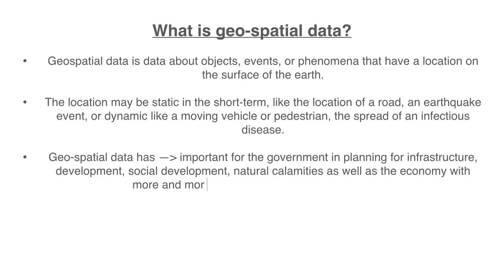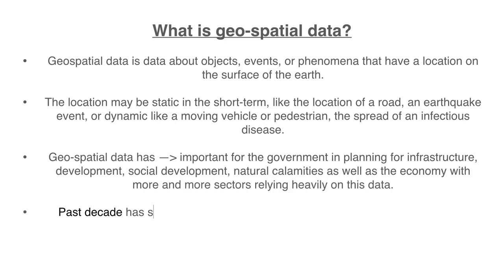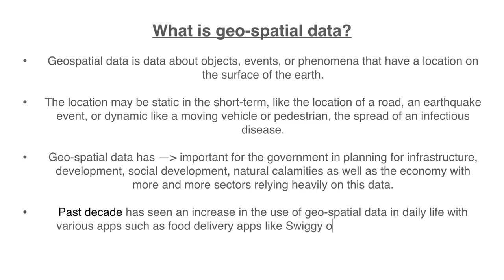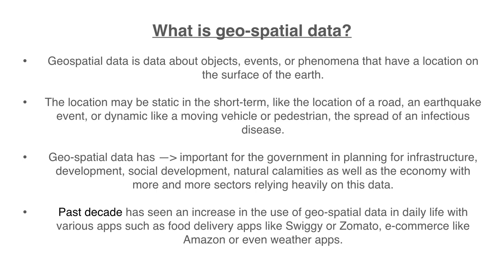The government uses this data for infrastructure planning, social development, monitoring natural calamities — recording where a calamity occurred and how much damage was done. Over the past decade, there has been a significant increase in the use of geospatial data in daily life, with apps such as food delivery apps like Swiggy and Zomato, e-commerce like Amazon, and even weather data. Because of this growing use, the government decided to deregulate.